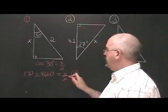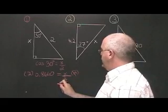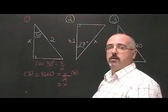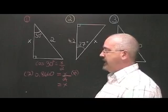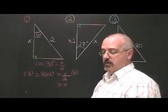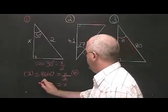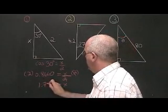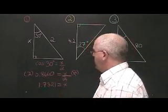These 2's cancel out. X is therefore equal to 2 times 0.8660, which is 1.7321. We have our answer.